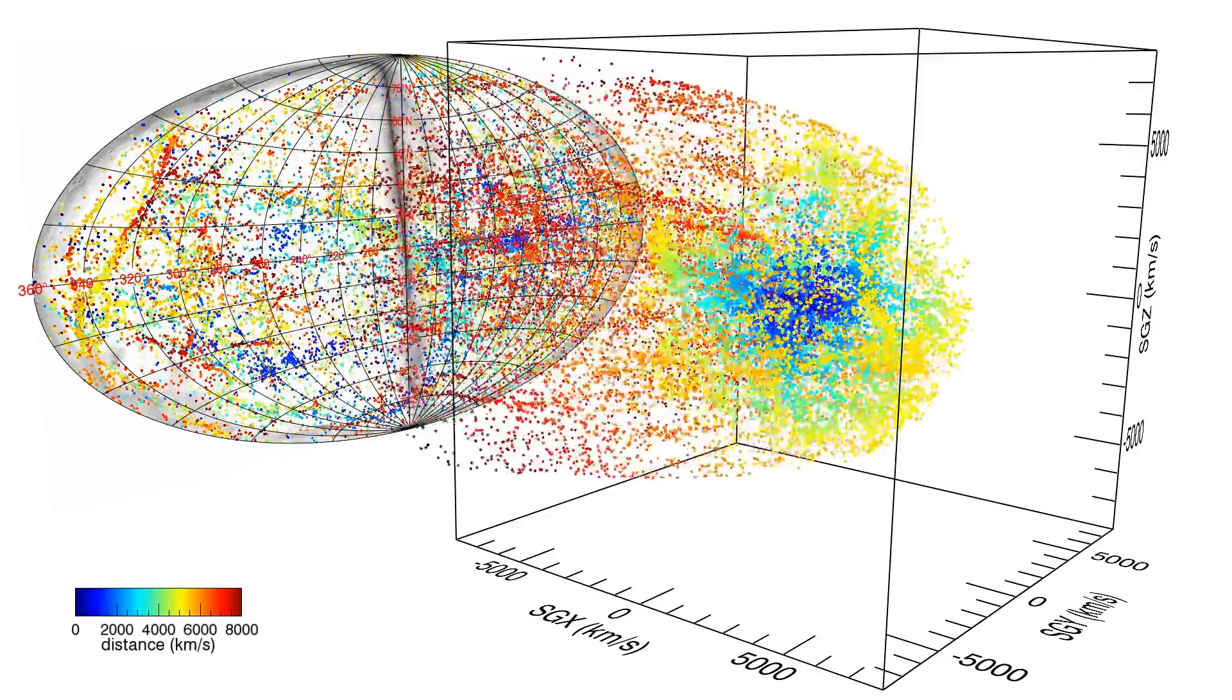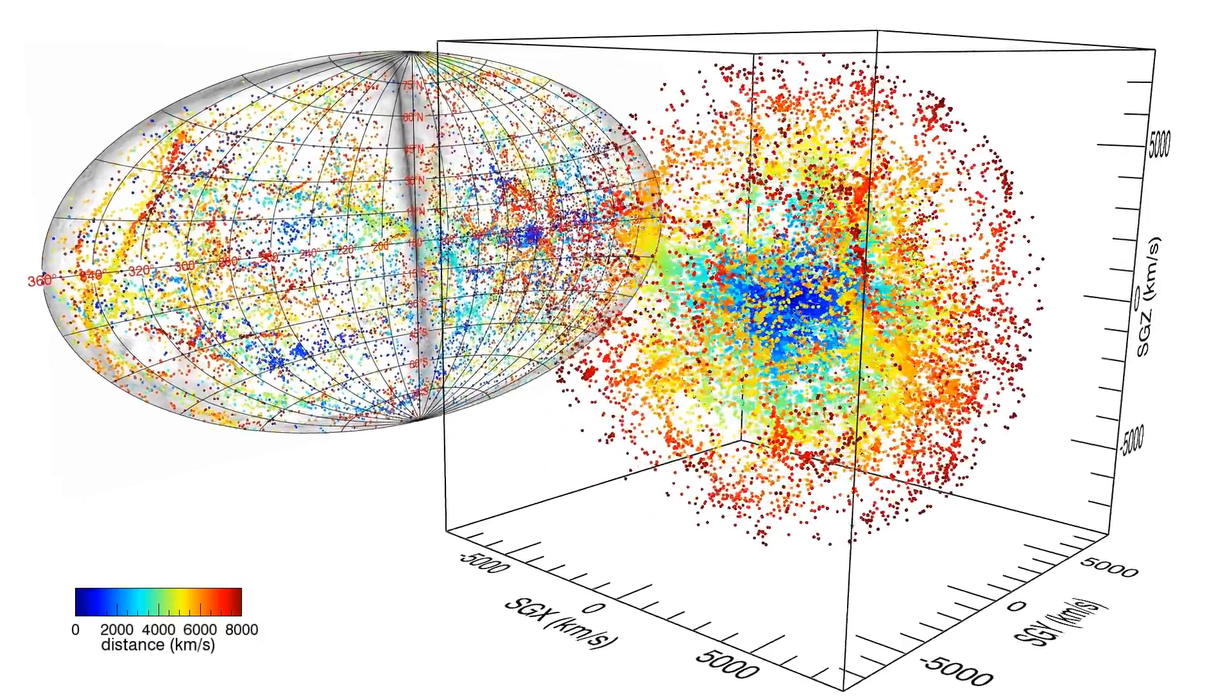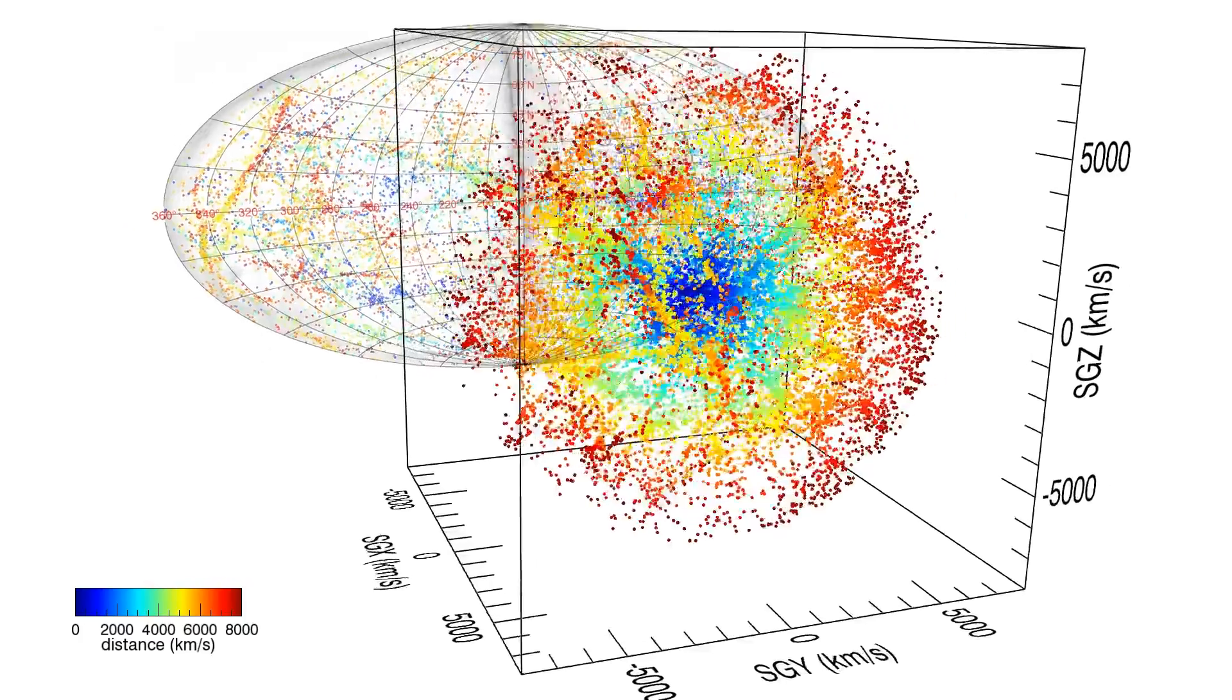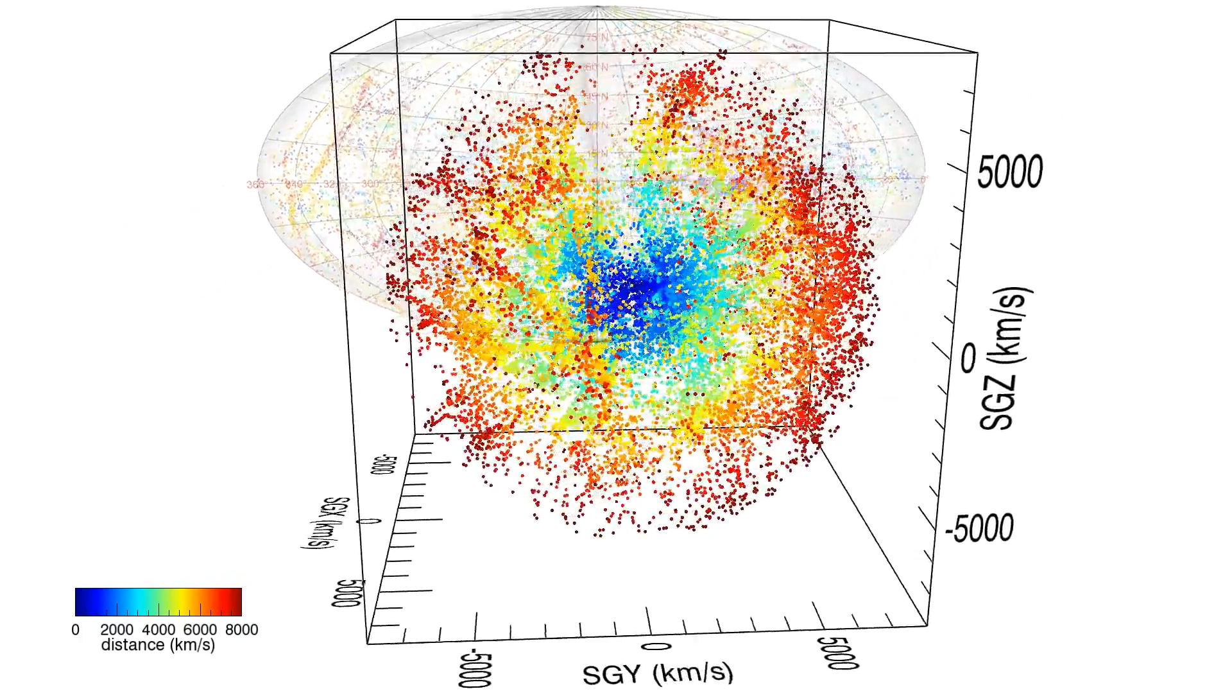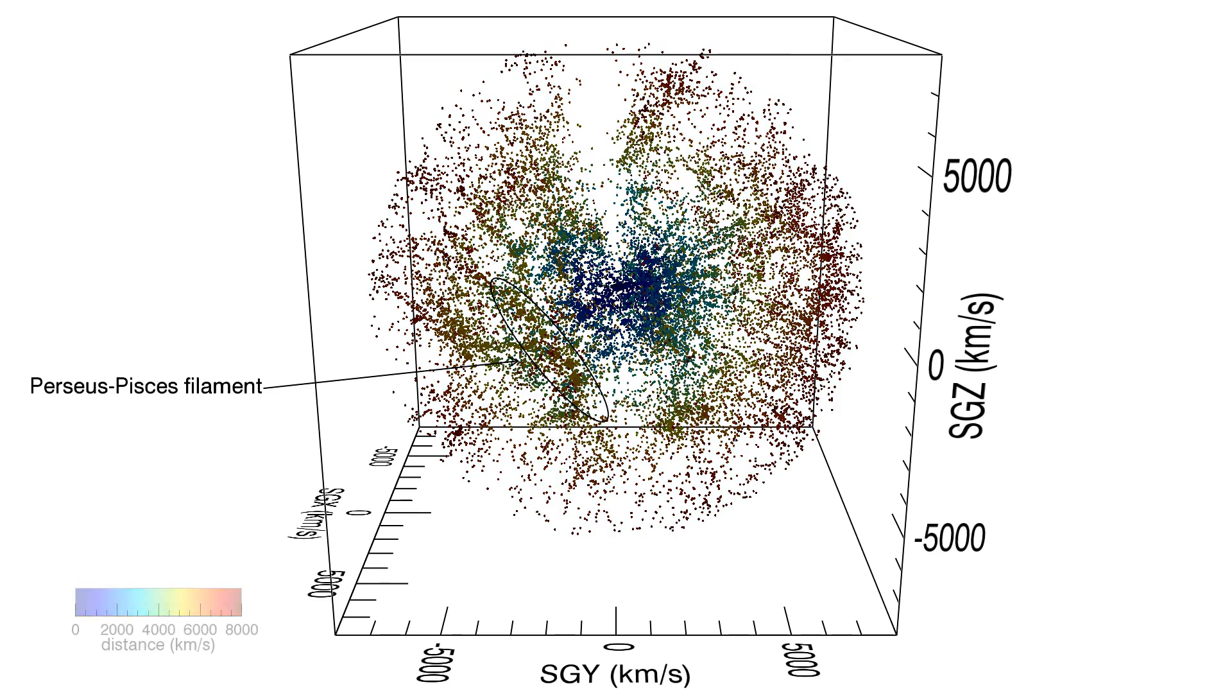Positions of galaxies within 3000 km per second have been modified in accordance with the model of galaxies streaming around the Virgo cluster. The first species filament is the prominent structure in the foreground of this view.